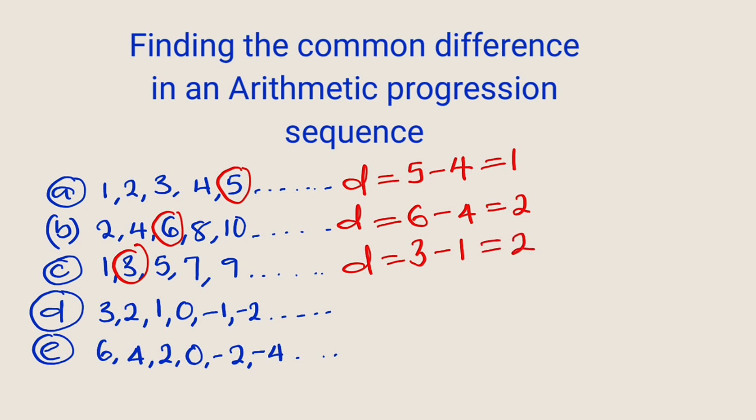Coming here we have common difference equal to, let us take a term at random, let's use zero. Zero minus the previous one which is one, this is equal to negative one. This is true for all of the terms.